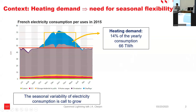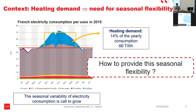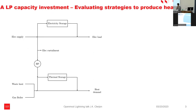Here you can see the French electricity consumption for one year, centered on the winter. We see that in France, most of the seasonal flexibility at the seasonal scale is due to heating, which is blue here. This seasonal variability is actually called to grow in France and in many countries in Europe. So one of the questions we can wonder is how to provide this seasonal flexibility, and this is the purpose of the model I'm presenting here.